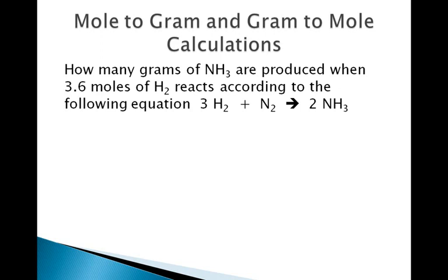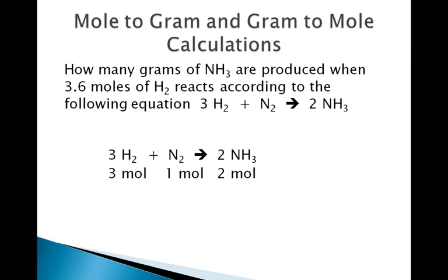We're going to solve this in two parts. Part 1, we're going to solve for the number of moles of NH3 that are produced. We will do this just like we did in the Part 1 video. First, we write down the chemical equation. Then we write down the stoichiometric relationship. For every 1 mole of N2 that reacts, 3 moles of H2 must react with it, and we'll get 2 moles of NH3. We go to the problem and find the amount that is given: 3.6 moles of H2, which we're going to put above H2.